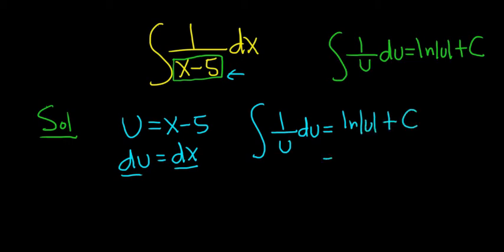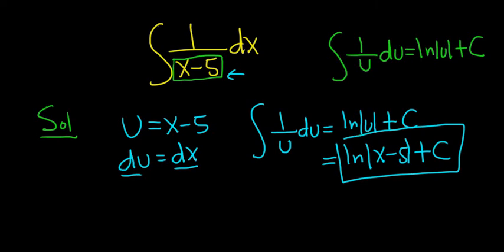And then we said u is x minus 5, so this is ln absolute value of x minus 5 plus c. And that's the final answer.